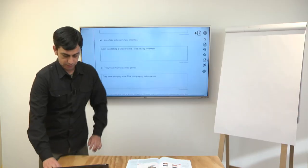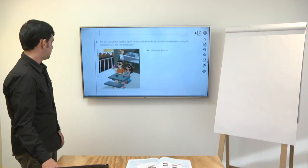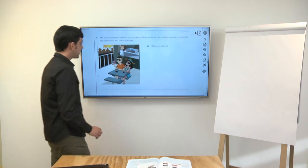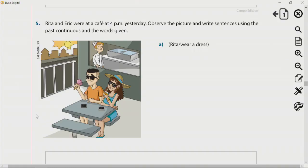So, we checked this. Letters A, B, and C. Still on page 349, I want you to do now exercise number 5. In which Rita and Eric were at the cafe at 4 p.m. yesterday,